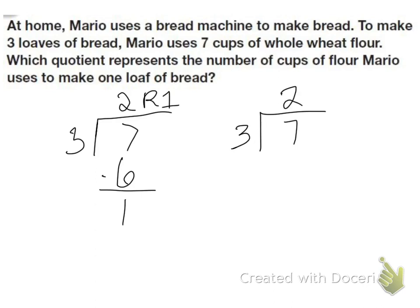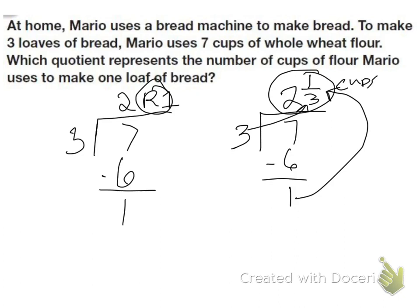Or I do the same thing, and I turn this into a fraction. So remember the numerator is the remainder, so that 1. And the denominator is what I'm dividing by. So I have 2 remainder 1 and 2 and 1 third. Well, I cannot have a remainder cup of flour. It just doesn't work. So I need to have it as a fraction form. So 2 and 1 third cups is how much flour would be in one loaf of bread.